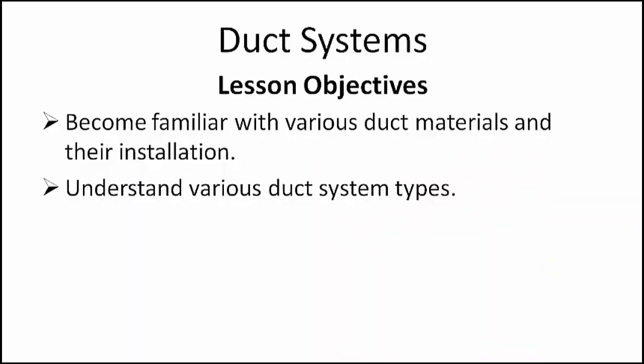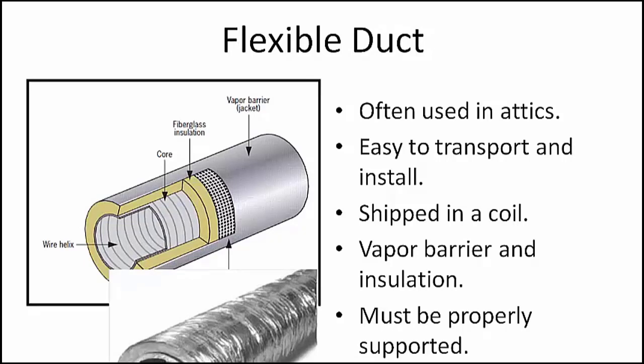We're going to become familiar with the various duct materials and their installation and understand the various duct system types. Flexible duct is used in attic installations and in other areas where there is likely to be a temperature difference greater than 15 degrees Fahrenheit between the conditioned air inside the duct and the ambient air immediately outside. Flexible or flex duct is easy to transport and install, and when selected and installed properly is an effective tool in moving conditioned air.